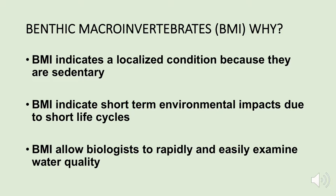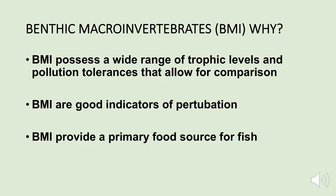The benthic macroinvertebrate index possesses a wide range of trophic levels and pollution tolerances that allow for comparison. We're looking at all sorts of macroinvertebrates in a stream, and different macroinvertebrates have different tolerance levels to different things like sediments, nitrates, or phosphates. Because we have so many different macroinvertebrates that have different tolerances, we can develop an index that will give us a good indicator of perturbation — telling us how disturbed the environment is compared to what would be a normal pristine environment.